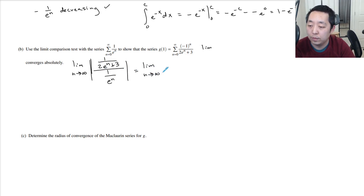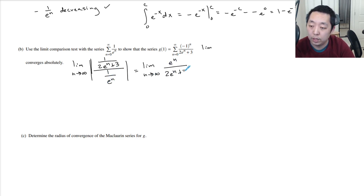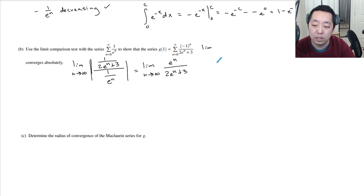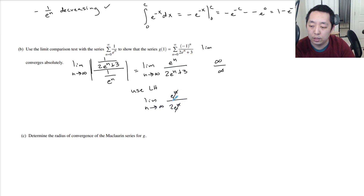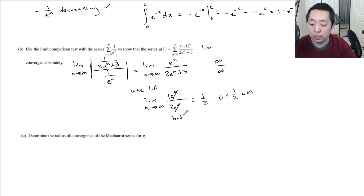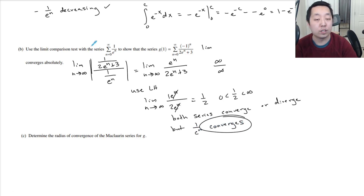If it's somewhere between 0 and infinity, then we know that both series converge or diverge. So this is the limit as n goes to infinity. We're going to multiply by the reciprocal, so this is going to be e to the n over 2e to the n plus 3. When you plug in infinity, you get infinity over infinity, so you can use L'Hôpital's rule. You get e to the n over the derivative 2e to the n — those cancel — and so you get 1/2. So 1/2 is between 0 and infinity, which means both series converge or diverge. But we know that 1 over e to the n converges, so then the other series also converges.